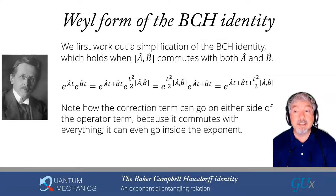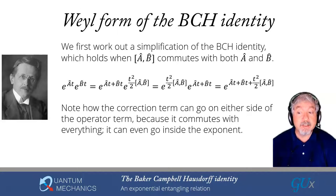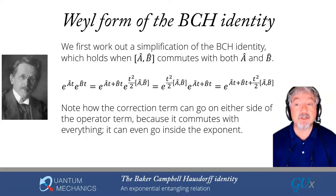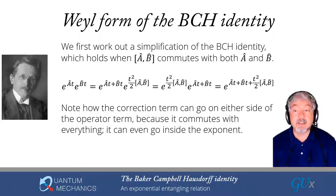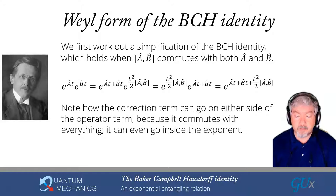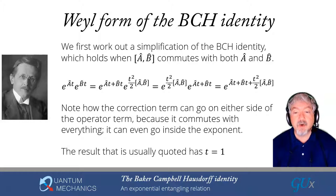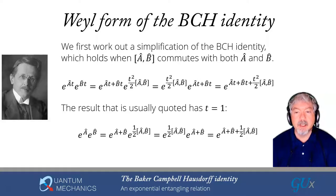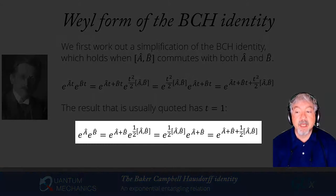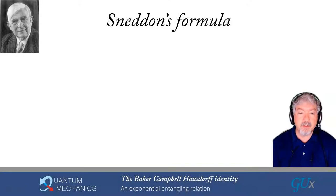Setting t=1 gives the Weyl form of the BCH identity: e^A e^B = e^{A+B} times e^{[A,B]/2}, with the correction term appearing on either side or merged into the exponent. This is the form we will be using most of the time.